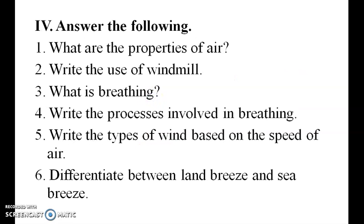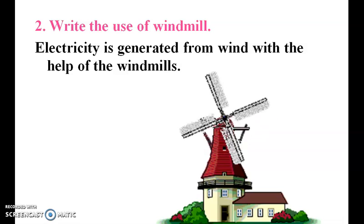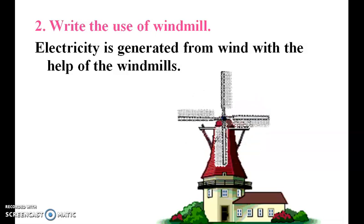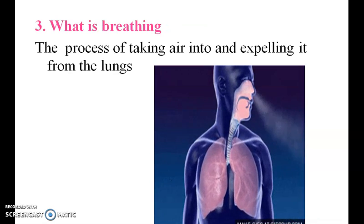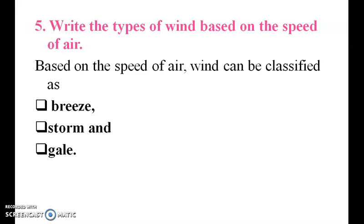Answer the following. What are the properties of air? Air has no definite shape and color, air has weight, and it occupies space. What are the uses of a windmill? Electricity is generated from the wind with the help of a windmill. What is breathing? The process of taking air into and expelling it from the lungs is called breathing. It involves inhalation and exhalation. Inhalation is taking air inside, and exhalation is releasing air outside. Types of wind based on speed: breeze, storm, and gale.